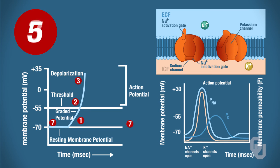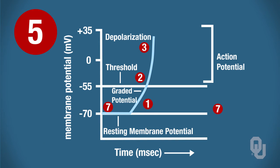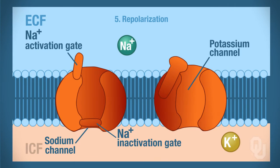The next phase of the action potential is repolarization. Repolarization begins at the peak — number 4 — and continues until the membrane potential reaches negative 70 millivolts, going from positive 30 millivolts back down to negative 70 millivolts. By the time you reach positive 30 millivolts, the sodium inactivation gate — remember it was triggered to close during depol — is now actually closed. It was so slow that it took until repol to close.